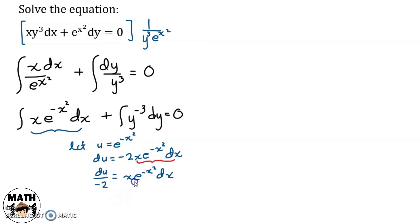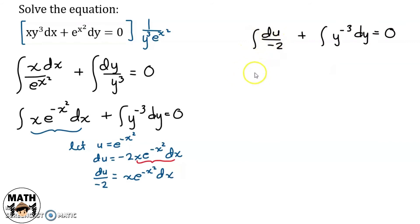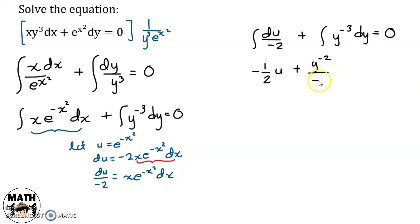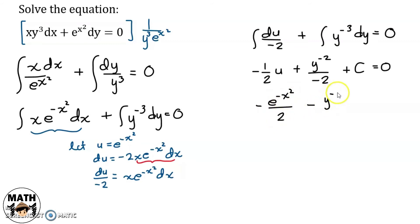Ipalit natin yung buo na to for x e raised to negative x squared dx. So, we'll have the integral of du over negative 2, plus the integral of y raised to negative 3 dy, equals 0. So, the integral of du over negative 2 is just negative 1 half times the integral of du, that is u, plus y raised to negative 3 plus 1 which is negative 2, divided by negative 2. So, dahil indefinite integral ito, kailangan ng constant, equals 0.